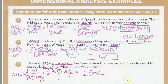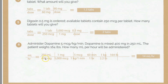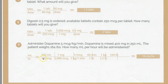Here's nursing.com's approach: they start with 250 mls over 400 milligrams, then add one milligram equals 1000 micrograms to cancel out milligrams, then 5 micrograms per kilogram per minute, then 60 minutes per one hour, then one kilogram equals 2.2 pounds, and the patient weighs 164 pounds. Multiplying 250 × 5 × 60 × 164 divided by 400 × 1000 × 2.2 also gives 14 mls per hour. Same answer, two different methods.